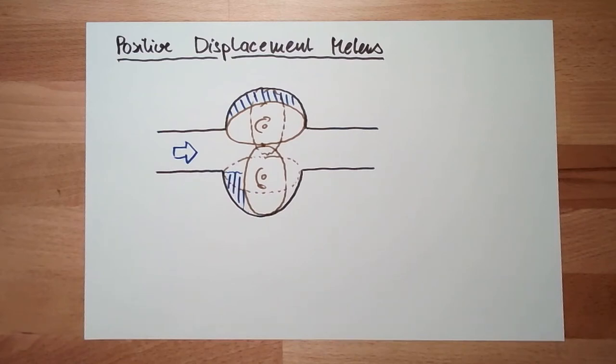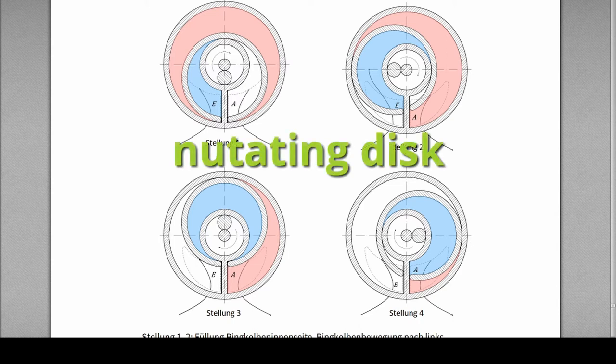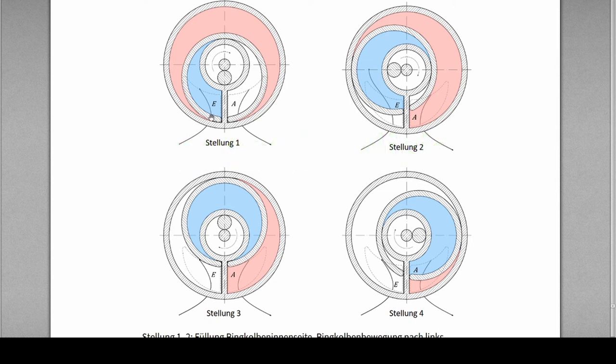One I want to show you, but it's a little bit too complicated to draw. So I'll show you in the script. Ringkolbenzähler in German, in English it's called notation disk. It's because the disk which is inside here, which is striped from left top to right bottom.